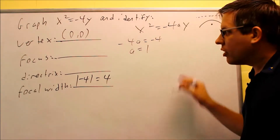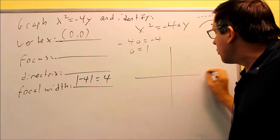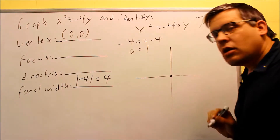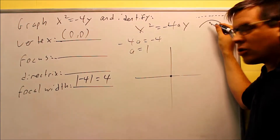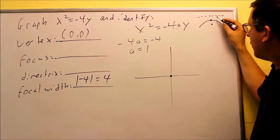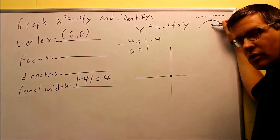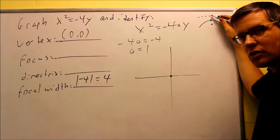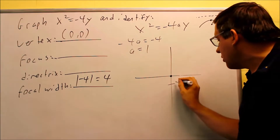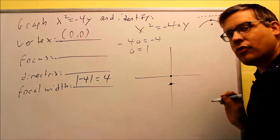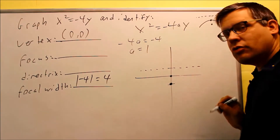Now that we have this, we'll go ahead and do the graph. The vertex is always the one you want to start with — we'll place that at (0, 0). The a value is 1. Looking at the model, my vertex is right there. The model says I've got to go down 1 to get the focus and up 1 to get the directrix. My a value is 1, so I go down 1 and make a dot — that's my focus.